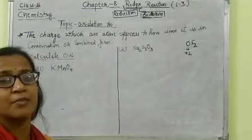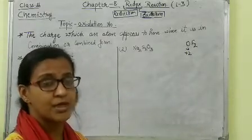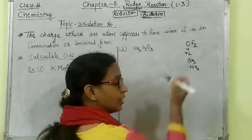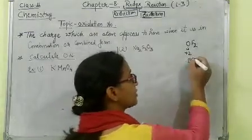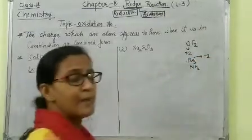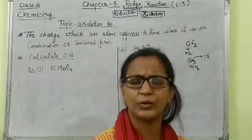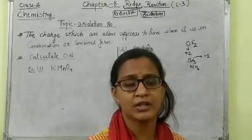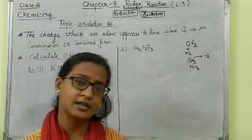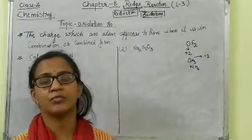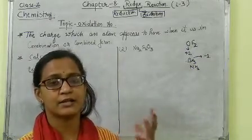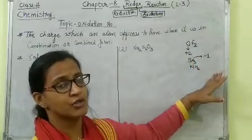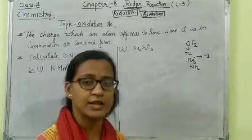Generally, hydrogen carries a plus 1 charge. But in the case of hydrides like BH3 or NH3, when hydrogen is present as a hydride, the charge on hydrogen is minus 1. So in most cases, oxygen is minus 2 but in some compounds it can be plus 2, and hydrogen is generally plus 1 but in some compounds it is minus 1.